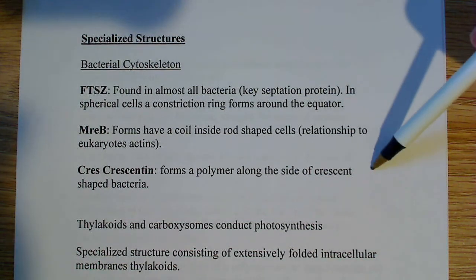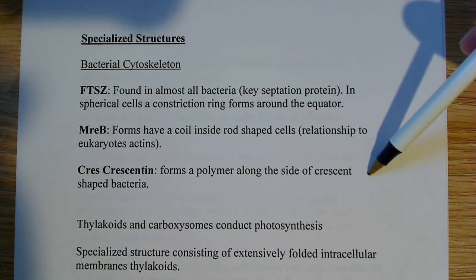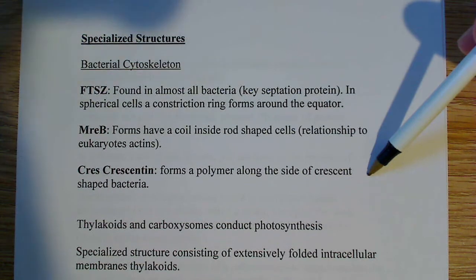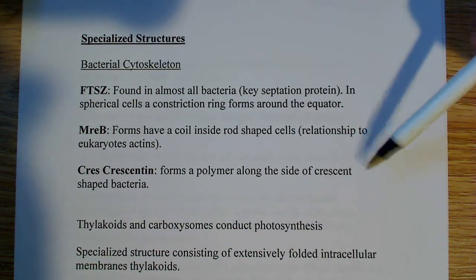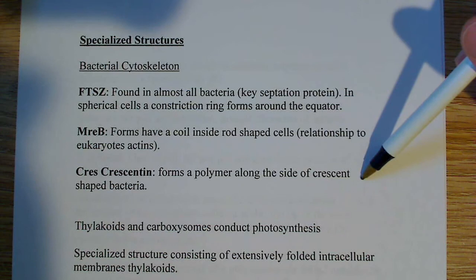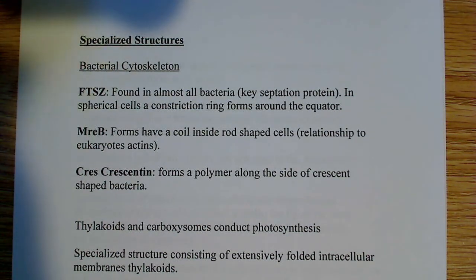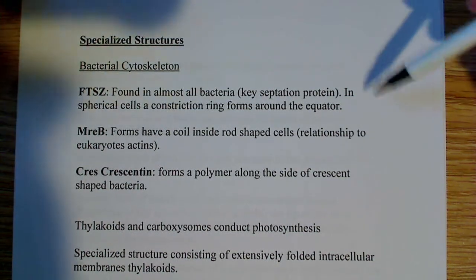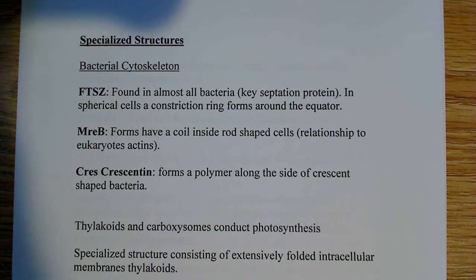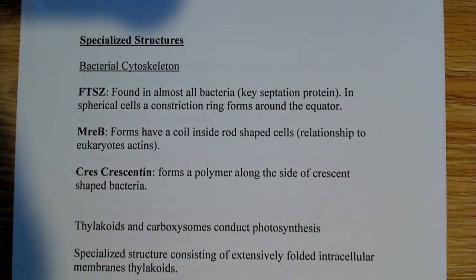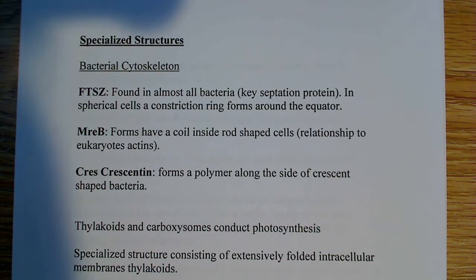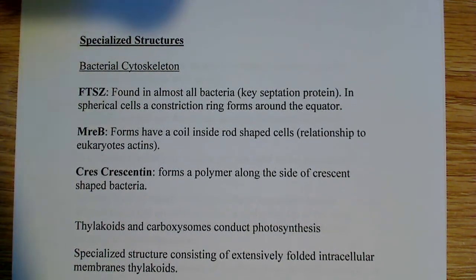There's also this other one called CreS, and that's crescentin, and it forms a polymer along the side of crescent-shaped bacteria, so it kind of gives the crescent-shaped bacteria its crescent shape. That's why it's considered part of this sort of bacterial cytoskeleton. So there are these specialized structures. People will tell you that in the large general sense, yes, bacteria do not have a cytoskeleton, but there are certain things that are cytoskeleton-like, or have some primitive function similar to a cytoskeleton.